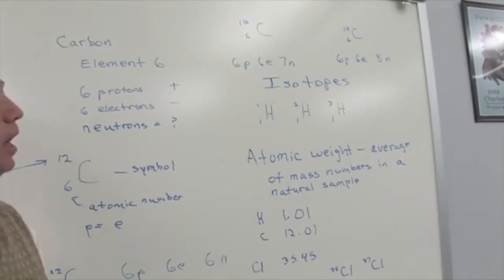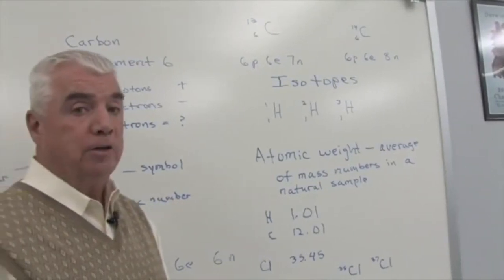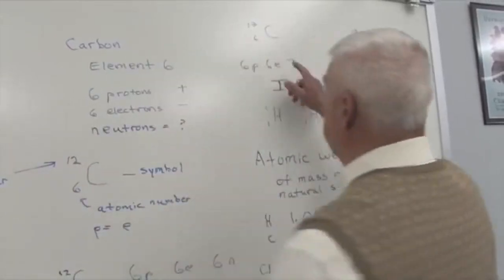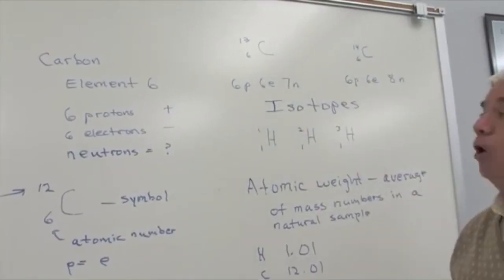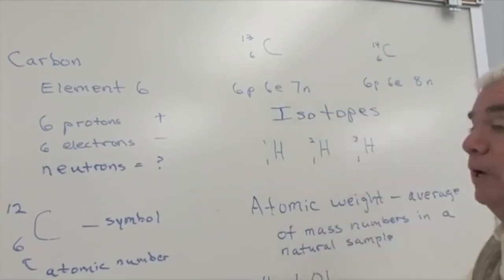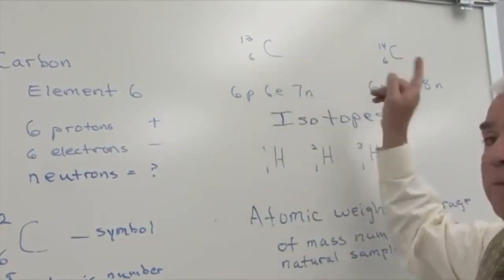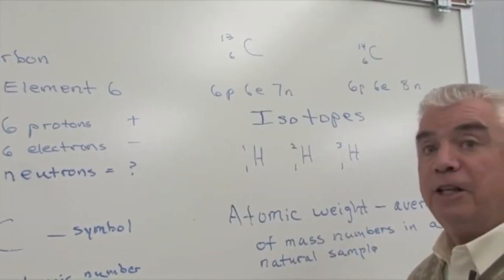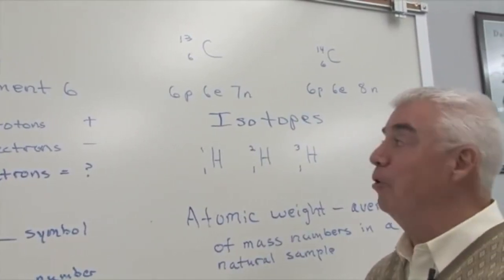It turns out that not all carbons have the same number of neutrons. For example, here are two more atoms of carbon. This one has a mass number of 13, this one has a mass number of 14. So they have different mass numbers, which means that these three examples of carbon have a different number of neutrons.